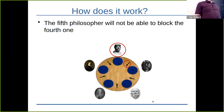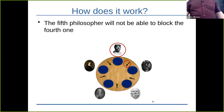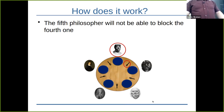By dedicating one philosopher to grab forks in a different order, we solve the deadlock problem. However, this solution is still not starvation-free — it's possible that one philosopher is always eating while another is perpetually starving. Starvation-free solutions are tricky. You can look at the Little Book of Semaphores for more examples, including this problem. Note that the Tanenbaum solution described as starvation-free is actually only deadlock-free.